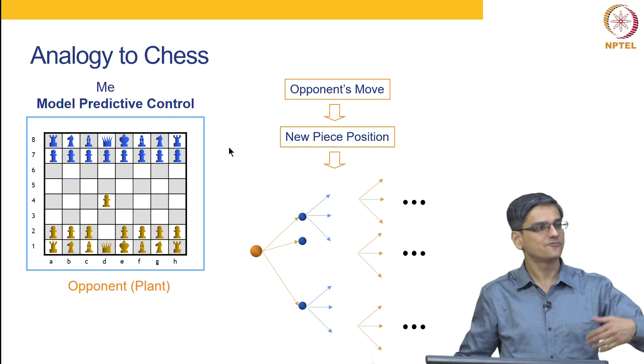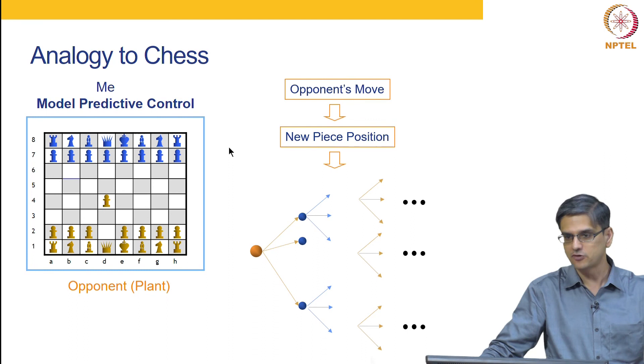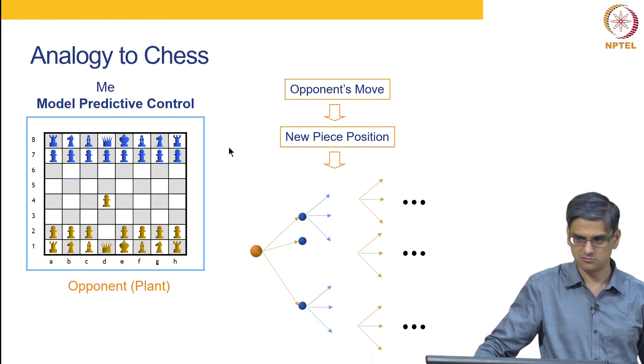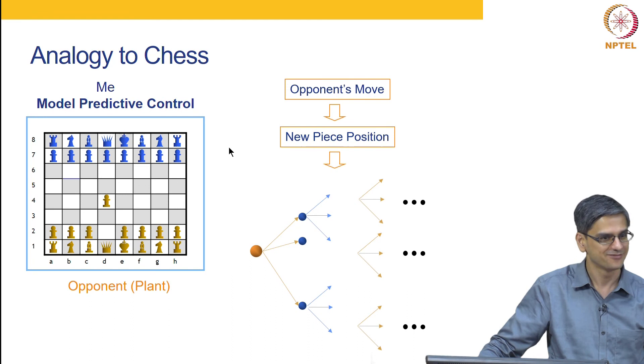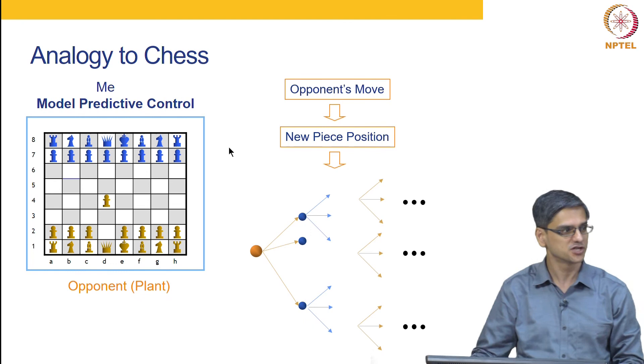Again what is something that differentiates me from let us say Vishwanathan Anand. I can look at 2 or 3 time steps into the future. Vishwanathan Anand probably looks at 25 time steps into the future. Another difference might be that he has a much better model of what the opponent is going to do than I have. So it is not just about the model, it is also about how far into the future can you predict.